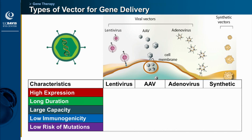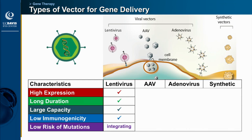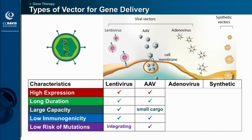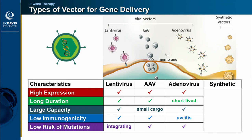Lentivirus, which includes HIV, checks most of those boxes with the exception that it integrates into the host genome, which can potentially cause adverse effects — particularly if it integrates into a tumor suppressor gene. AAV does not integrate but has a much smaller carrying capacity, so for large genes like the Stargardt gene ABCA4, it doesn't fit inside AAV and must be delivered with lentivirus. Adenovirus has largely been abandoned due to short expression and inflammation. Nanoparticles and polymers are relatively safe but have lower efficacy than viral vectors.